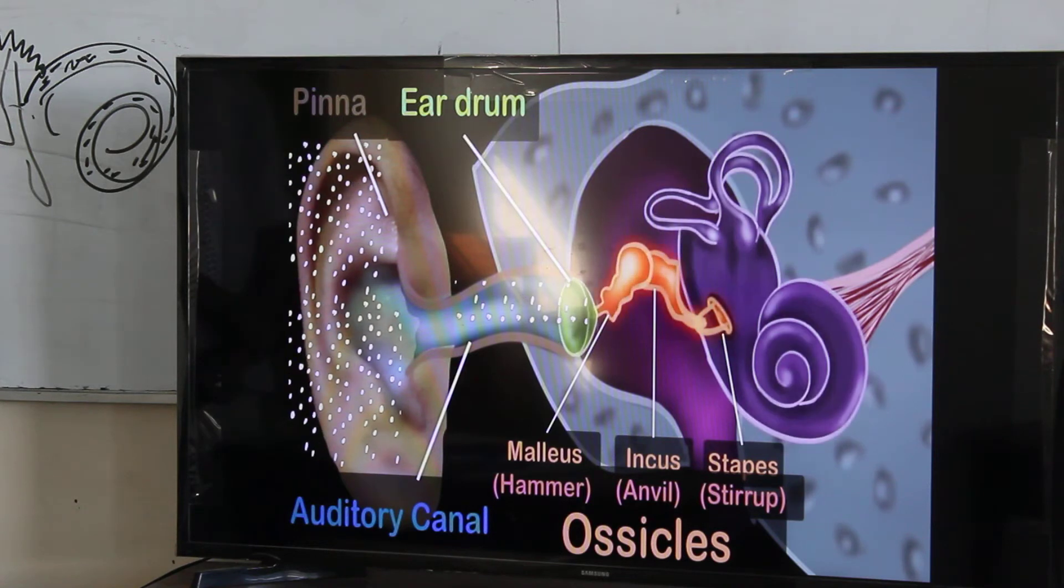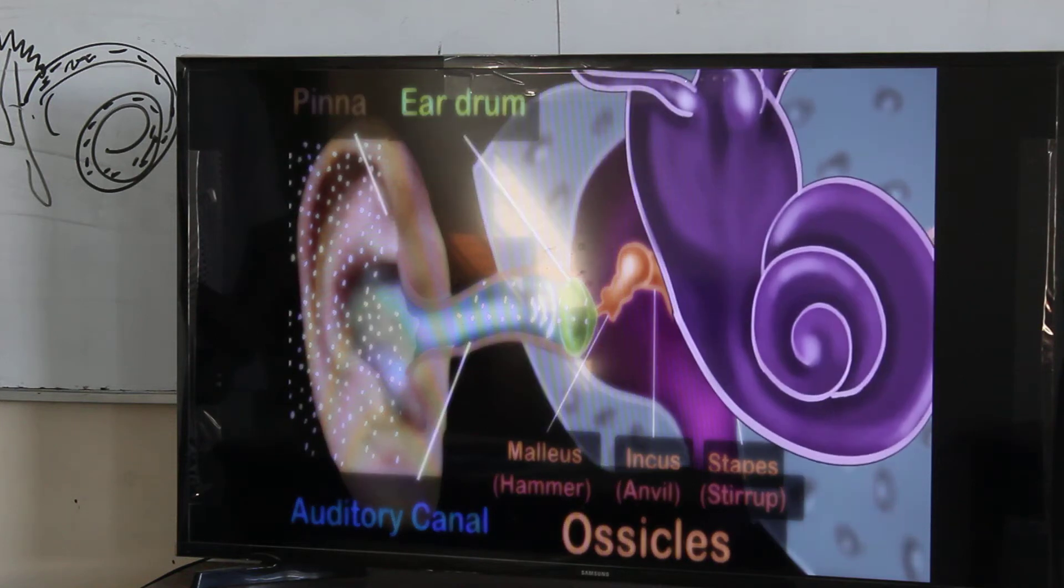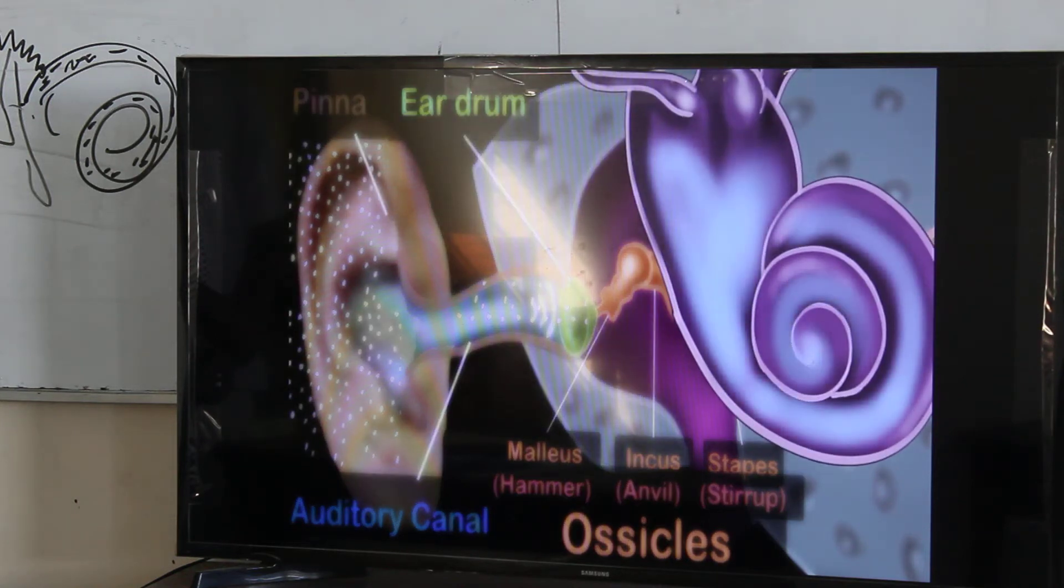Now their main job is to increase or amplify the pressure of the sound waves when it reaches the inner ear. But why do we need to increase the pressure of the sound waves? Because, as we will see, the inner ear consists of a liquid, not air. So the vibrations must transfer into a liquid. And you might already know that vibrating or moving particles of liquid is much harder than moving particles of air.